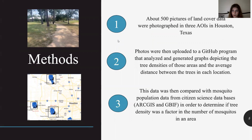To start our research, we first selected three AOIs, or areas of interest, within the city of Houston, Texas. We then utilized GLOBE Observer, a citizen science application that collects observational data and images from users throughout the world. In this case, we gathered just over 500 photos of land cover data taken by Houston residents within the three areas of interest. We then uploaded these photos and GLOBE data to a GitHub program that analyzed these images and generated plots depicting the tree densities and distribution throughout our AOIs in the general Houston area. We then obtained an ArcGIS polygon layer of our areas of interest and layered it onto the mosquito population data from iNaturalist and Mosquito Habitat Mapper that were in the region. In doing so, we were able to determine if tree density was a factor in mosquito numbers by generating three figures of Houston, Texas — one depicting tree density, one depicting tree concentration and urbanization levels, and one depicting mosquito population levels.